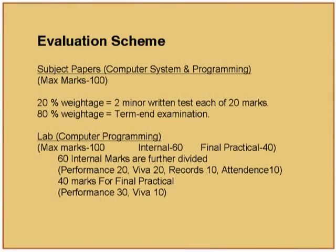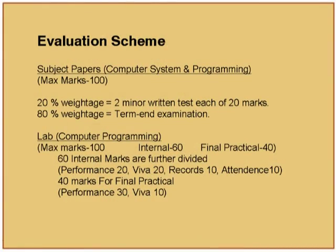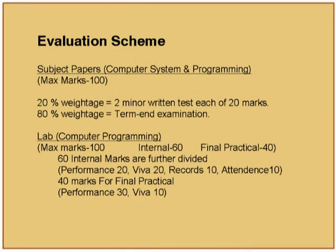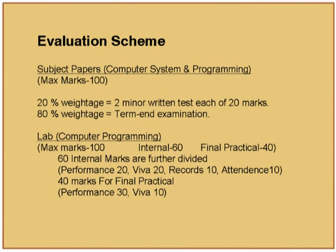Regarding the evaluation scheme: the theory paper is out of 100 marks — 20 percent for two minor written tests and 80 percent for the end-term examination. For lab and computer programming, the maximum marks are 100: 60 internal marks and 40 for the final practical. The 60 internal marks are divided into 20 for performance, 20 for viva, 10 for record, and 10 for attendance. The 40 final practical marks are split into 30 for performance and 10 for viva.